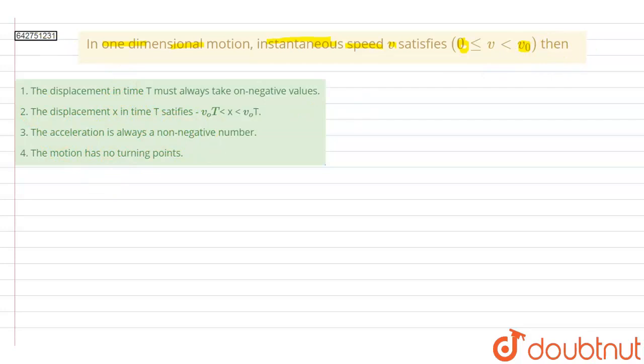So before getting on to the options let us revise one-dimensional motion. Now one-dimensional motion is the motion of a particle when it moves along only one of the axis. So let's say if this is x-axis then the motion of the particle will only be constricted to this axis and not in y-axis.